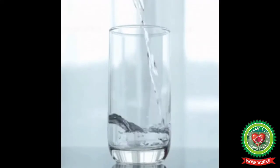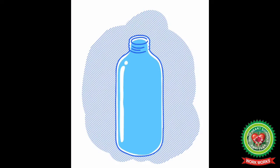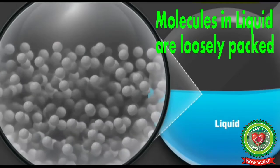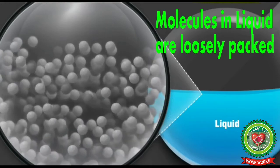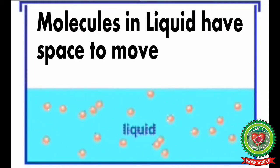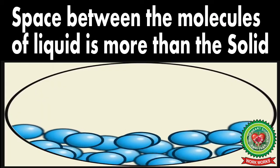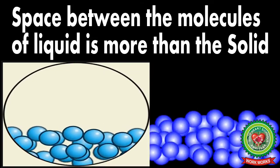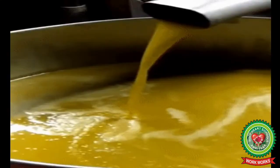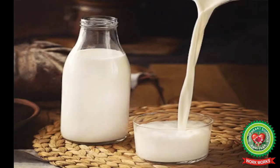For example, if you put water in a glass it will take the shape of the glass, and if you put water in a bottle it will take the shape of the bottle. The particles in a liquid are loosely packed and have more space between them compared to solids. Examples of liquids are oil, water, and milk.